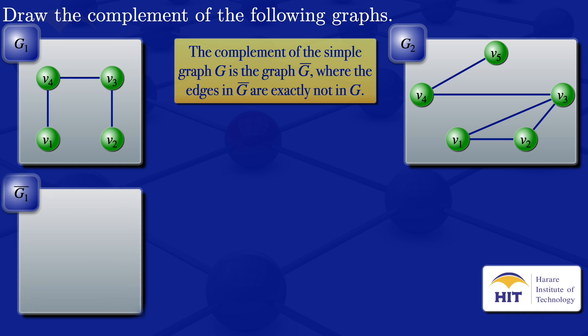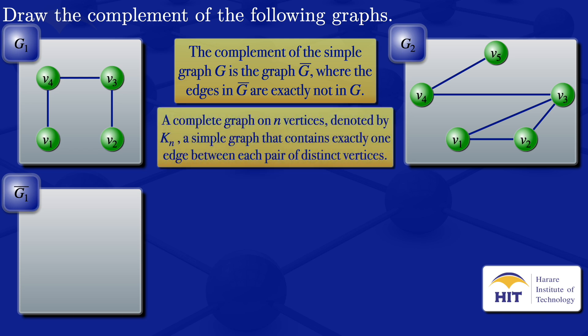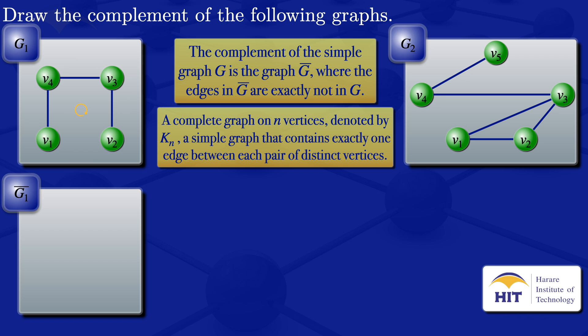I'll draw my G1 complement. To draw the G1 complement, I usually find it helpful to first draw the complete graph, because from the complete graph we can see the edges that are not in G1. By definition, a complete graph on N vertices, denoted by KN, is a simple graph that contains exactly one edge between each pair of distinct vertices. Since this graph has four vertices, I'll draw a graph K4.